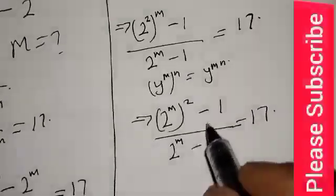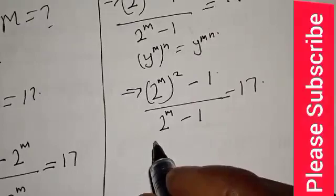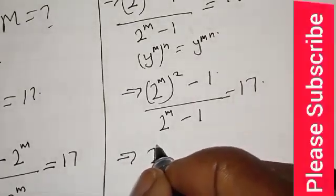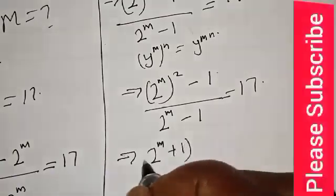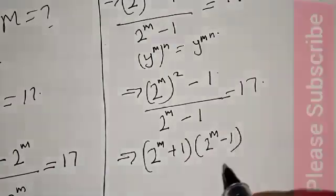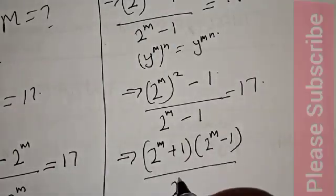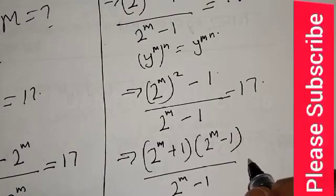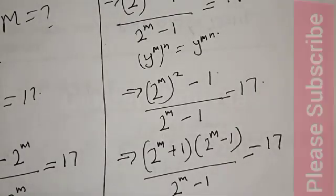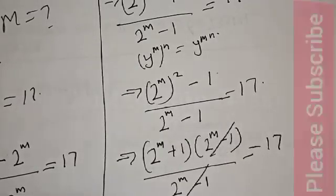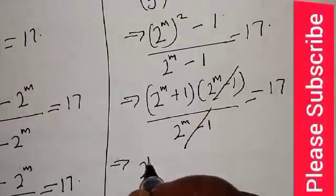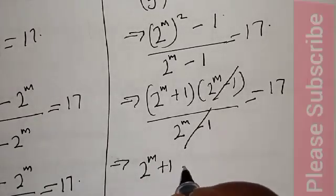Then this denominator can be expressed as: we have 2 raised to the power m plus 1, into 2 raised to the power m minus 1, over 2 raised to the power m minus 1, equal to 17. Then this will cancel, and we are left with 2 raised to the power m plus 1, equal to 17.